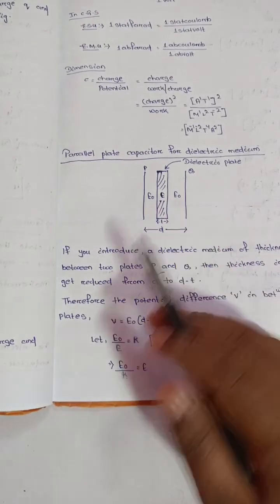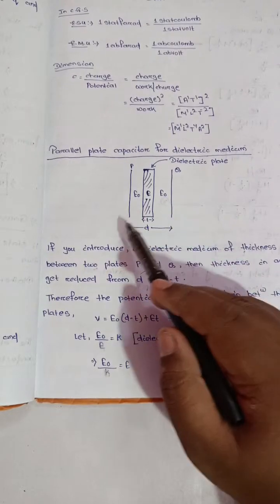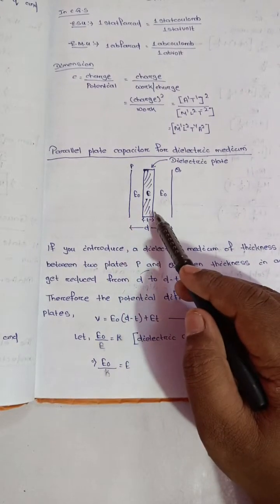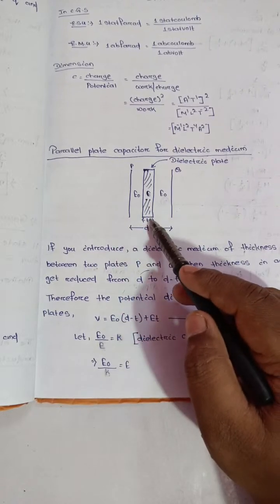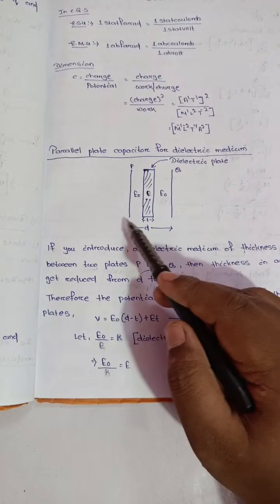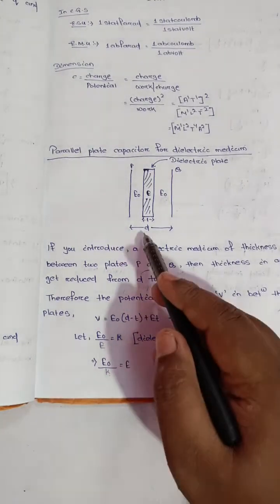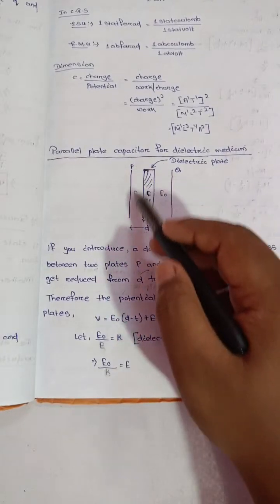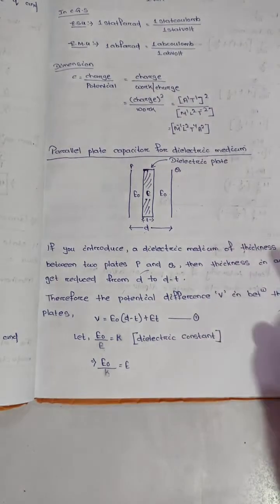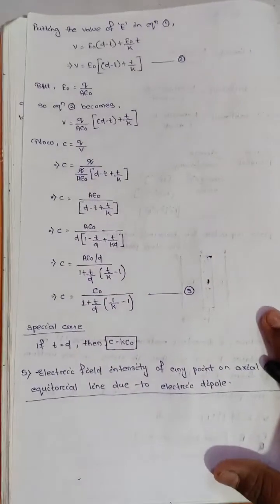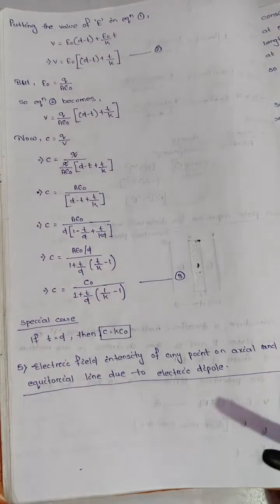Let us consider two plates P and Q in which a dielectric slab is placed. The dielectric slab has thickness t and the distance between the two plates is d. The medium between the plates consists of both dielectric and air portions.